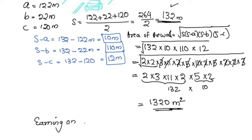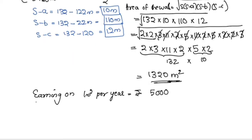1 m² per year costs 5,000 rupees. We have 1,320 m². So the earning on 1,320 m² per year is 1,320 × 5,000 = 66,00,000 rupees per year.